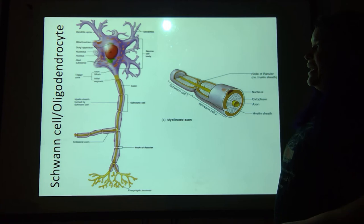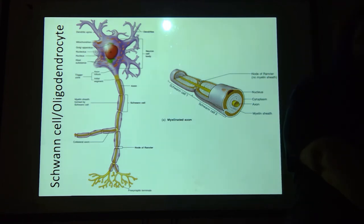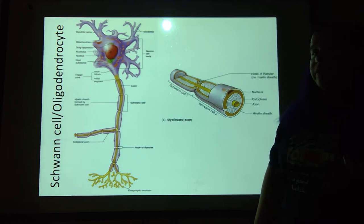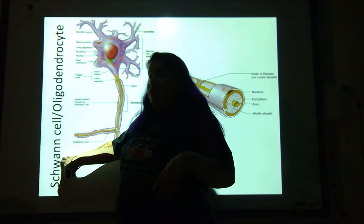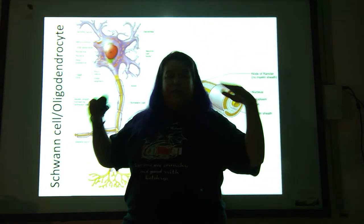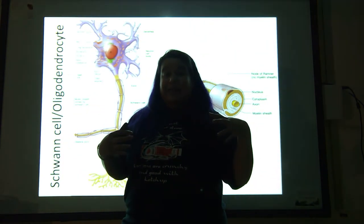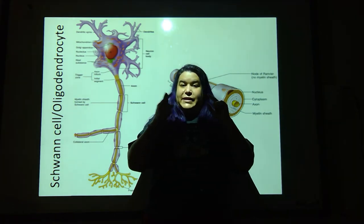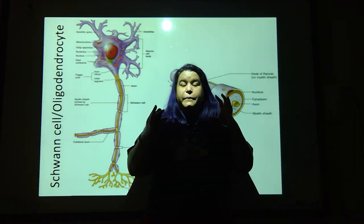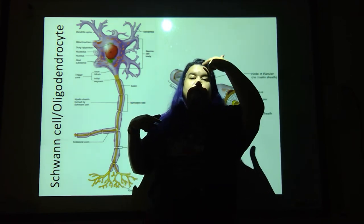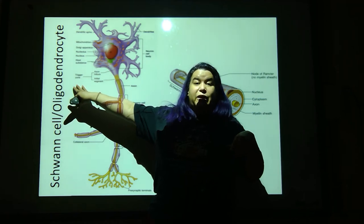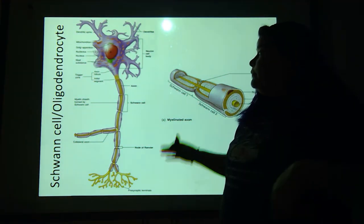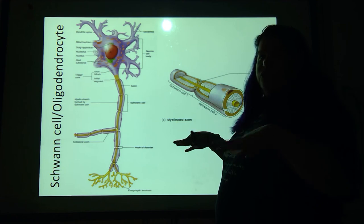Taking a closer look at the Schwann cell — we can also refer to this cell type as an oligodendrocyte. The difference is that a Schwann cell is found in the peripheral nervous system: not the brain and spinal cord, but everywhere else. However, if you have this same wrapping cinnamon roll cell in the central nervous system — the brain and spinal cord — then it is called an oligodendrocyte, and it is specific to your central nervous system.